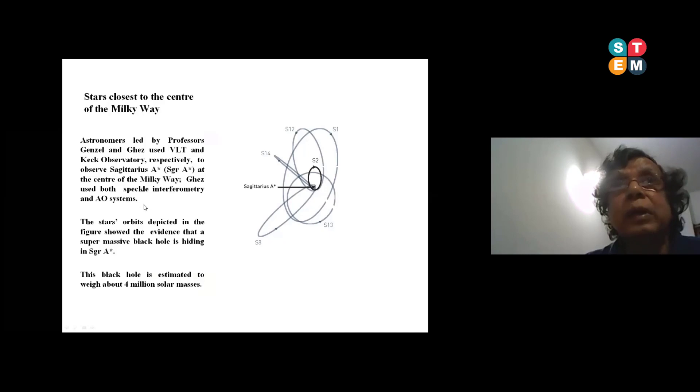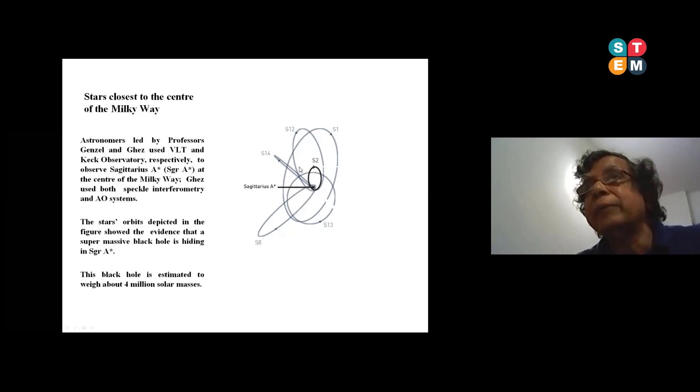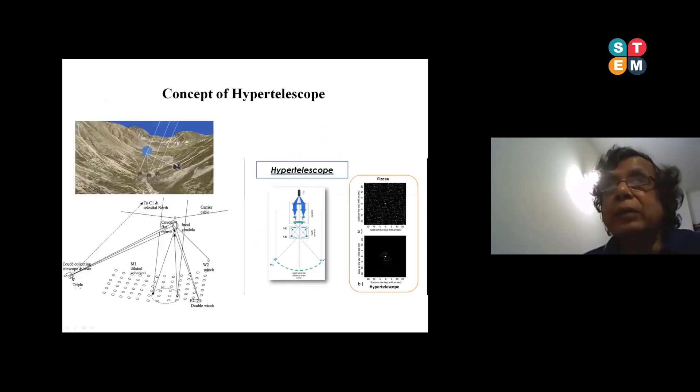This is the interesting one that recently Ghez and Genzel, there are two different groups - one used the VLTI, other one used Keck Observatory telescope. Look at that particular area there - several stars are orbiting. See that S12, S1, and then all those calculations they did. Several years of data they calculated and then they found that all these stars are moving around this particular object which they ensure that this is the supermassive black hole.